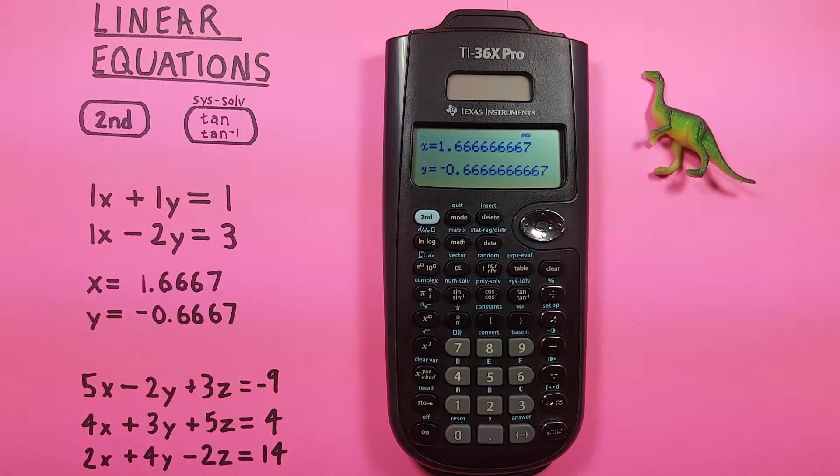For X and Y is negative 0.6666. That's a two by two or two variable linear equation.